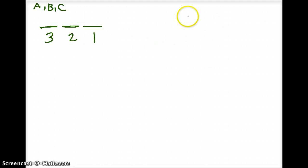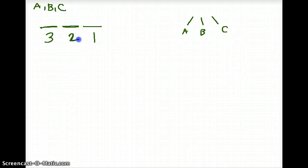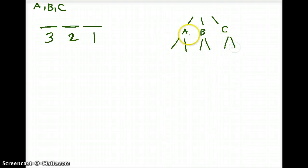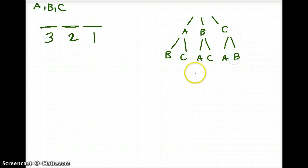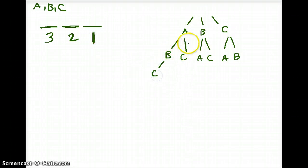So if we make a tree diagram: the first position gives us option A, B, and C. In the second box, we have two options for each branch — if we placed A, we have B and C left; if we placed B, we have A and C; if we placed C, we have A and B. And in the last position we only have one option remaining — the last letter. So: A-B-C, A-C-B, B-A-C, B-C-A, C-A-B, C-B-A.